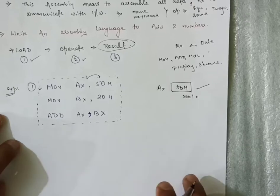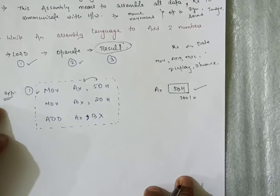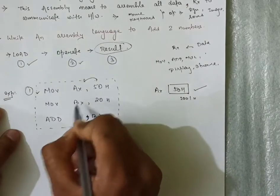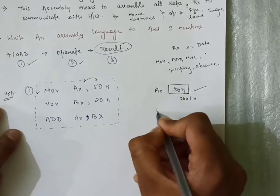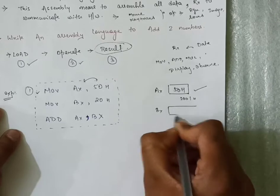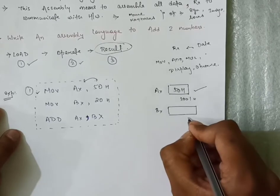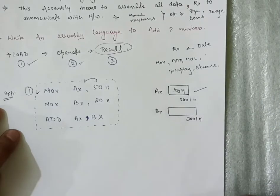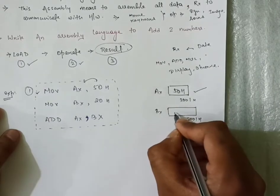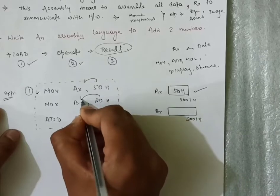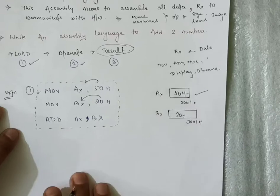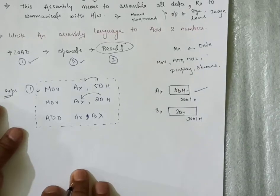Again, for operating two values, we need two registers. So second one, I took BX. The BX will also have some address, let's give it 3001H. And the value we have given to BX is 20H in hexadecimal.